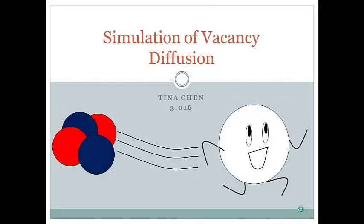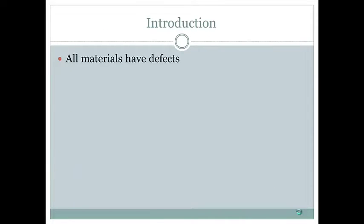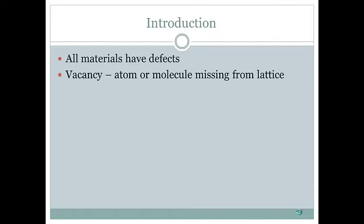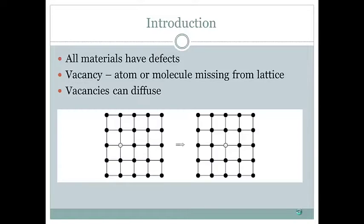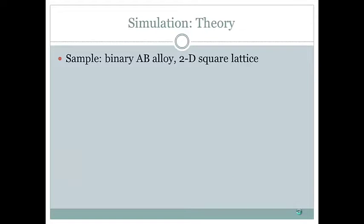In this video, we will be exploring the effect of bond energies on vacancy diffusion using a Mathematica simulation. Even the most carefully produced materials have defects, and these defects often affect the physical properties of the material. One type of defect is a vacancy, in which an atom or molecule is missing from a point in the lattice. Vacancies can diffuse or move around, and in this video we will investigate diffusion of a single vacancy in a binary AB alloy.